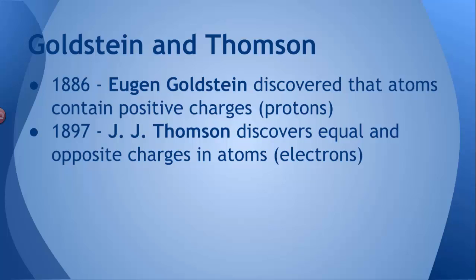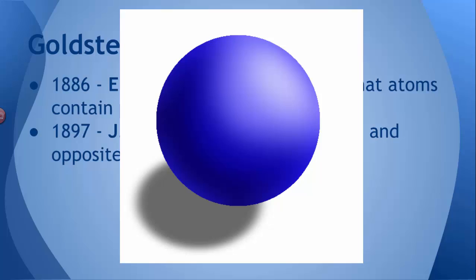And what happened then was we now began to be able to visualize the atom. See, up until this point, John Dalton's idea of what an atom looked like, it looked sort of like a billiard ball. It was just a round sphere. It had no features. It was just a solid ball.